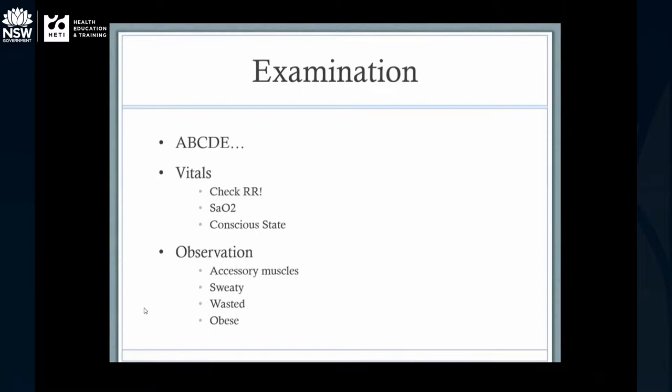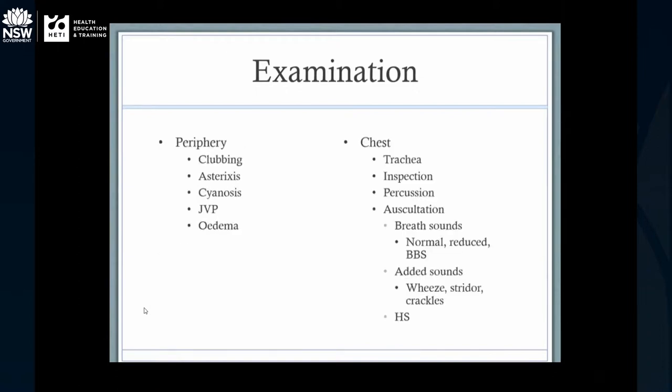Respiratory rate can be elevated for all sorts of reasons - pain, acidosis, hypoxia, anxiety - so it's an important thing to check. You want to know their oxygen saturations and how much oxygen they're on. If you get called to see someone on high-flow oxygen, you need to know what FiO2 they're on. Someone saturating at 94% on 28% FiO2 is obviously very different from someone on 100% or 60% oxygen. Assess whether they're in respiratory distress, check accessory muscle use, and comment on body habitus.